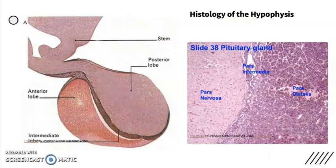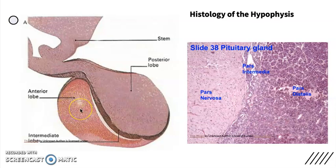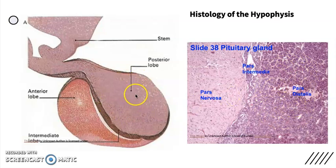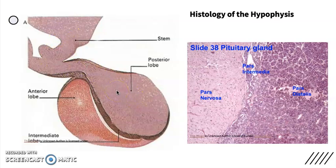The pituitary gland is derived from two embryologically distinct tissues: neural and glandular tissue. That's why the anterior pituitary, called adenohypophysis, is composed predominantly of cells that secrete hormones — as you can see here, the tissue is populated with glands. When you look at the posterior lobe, called pars nervosa or neurohypophysis, it is not a separate organ but an extension of the hypothalamus, with the same texture, because it contains axons of hypothalamic neurons which extend downward as a large bundle behind the anterior pituitary.